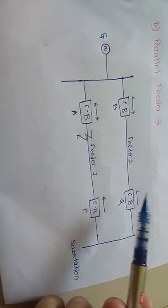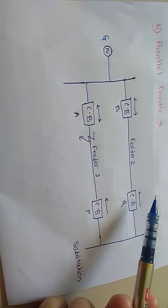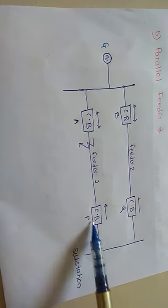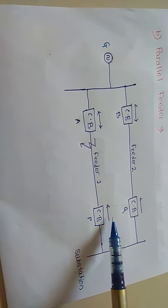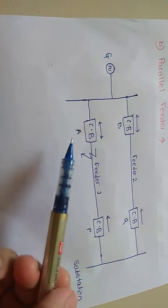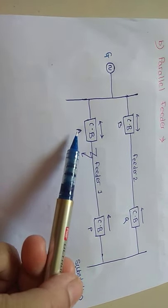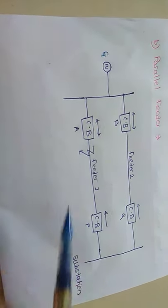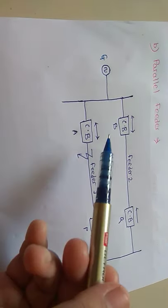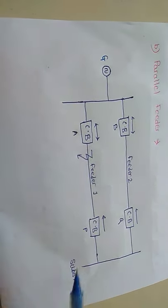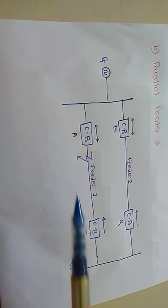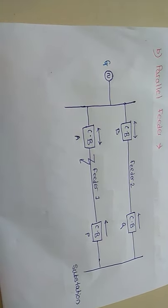These two feeders, feeder 1 and feeder 2, cannot be protected by non-directional overcurrent relays only. P and Q are the non-directional overcurrent relays. It is also necessary to use directional relays, that is relay A and relay B. For the parallel feeder, not only non-directional relays are required, but directional relays are also required.